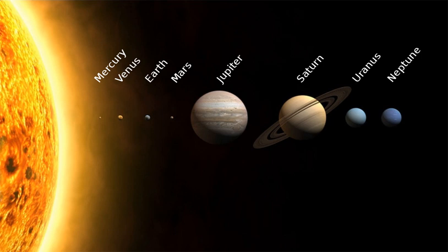Some solar system models attempt to convey the relative scales involved in the solar system on human terms. Some are small in scale and may be mechanical, called orreries, whereas others extend across cities or regional areas. The largest such scale model, the Sweden solar system, uses the 110-metre Ericsson Globe in Stockholm as its substitute sun, and following the scale, Jupiter is a 7.5-metre sphere at Stockholm-Arlanda airport, 40 kilometres away, where the farthest current object, Sedna, is a 10-centimetre sphere in Luleå, 912 kilometres away. If the Sun-Neptune distance is scaled to 100 metres, then the Sun would be about 3 centimetres in diameter, roughly two-thirds the diameter of a golf ball. The giant planets would all be smaller than about 3 millimetres, and Earth's diameter, along with that of the other terrestrial planets, would be smaller than a flea — 0.3 millimetres — at this scale.